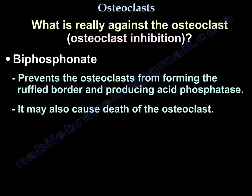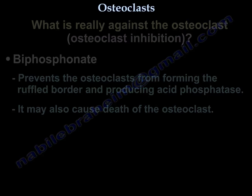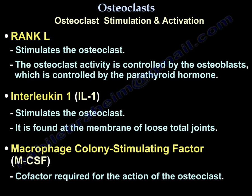Bisphosphonates prevent the osteoclast from forming the ruffled border and producing acid phosphatase, and may also cause death of the osteoclast. RANK-L stimulates the osteoclast, and remember that osteoclast activity is controlled by the osteoblast, which in turn is controlled by parathyroid hormone. Interleukin-1 stimulates the osteoclast and is found at the membrane of loose total joints. Macrophage colony-stimulating factor (M-CSF) is a cofactor required for osteoclast action.